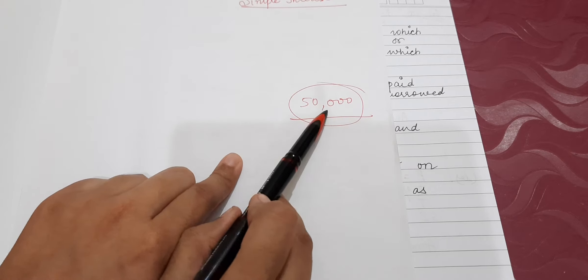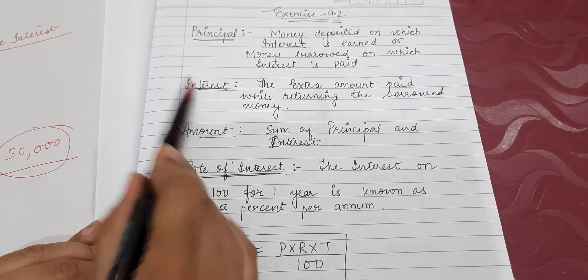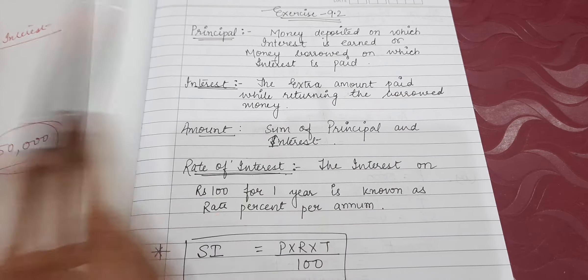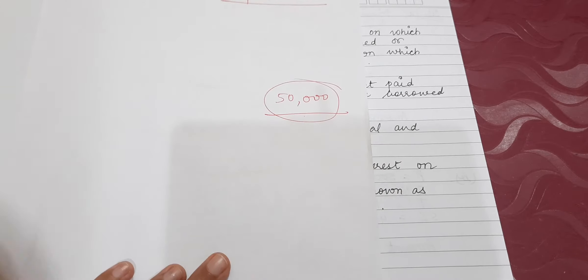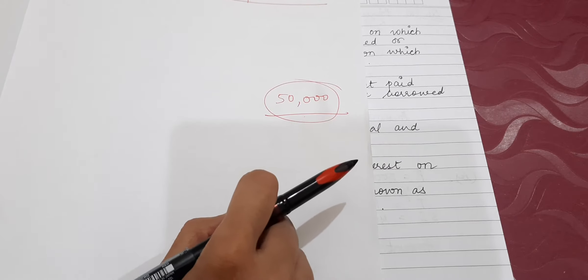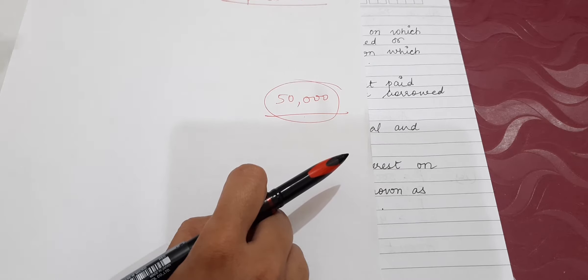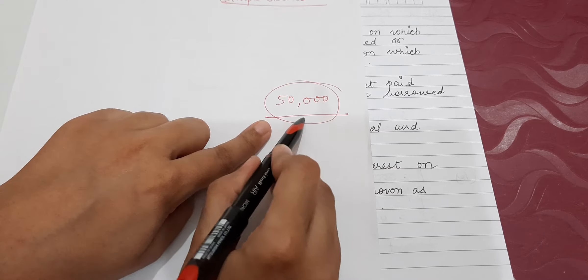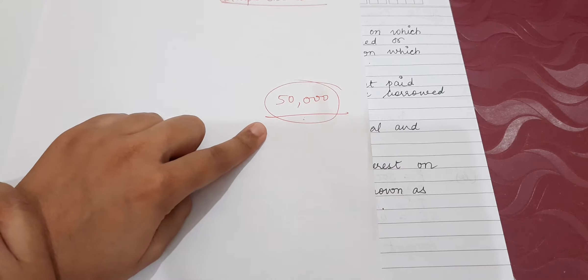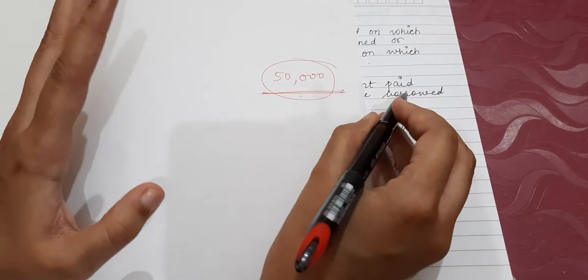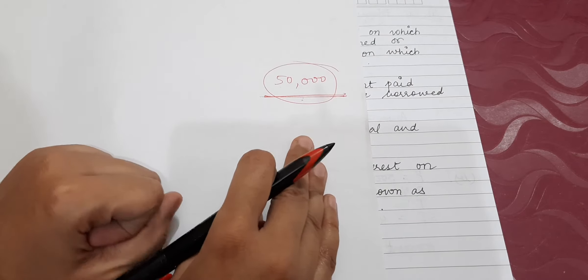Next, interest. Simple interest means the extra amount paid while returning the borrowed money. If I have borrowed money from the bank, the bank will give me that money but will impose some extra charges on it. That extra charge is called interest, and it depends upon the time by which I am going to return the money.